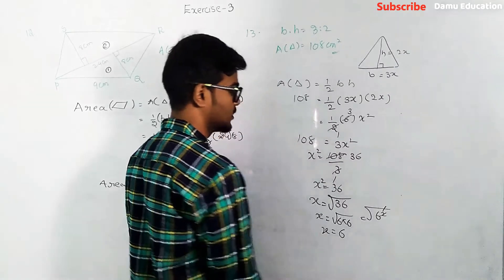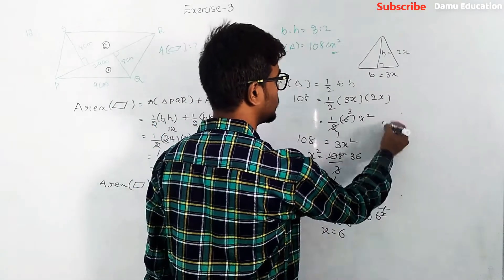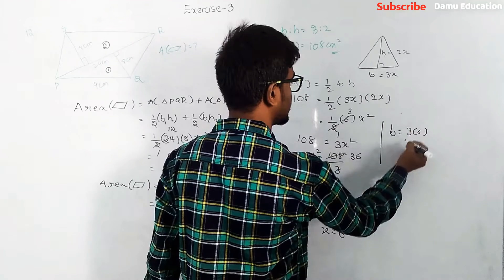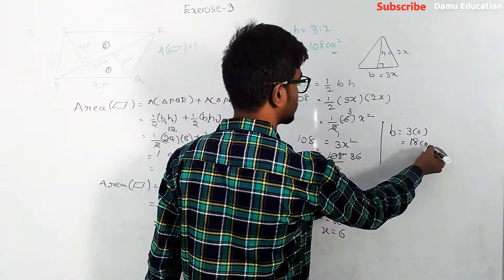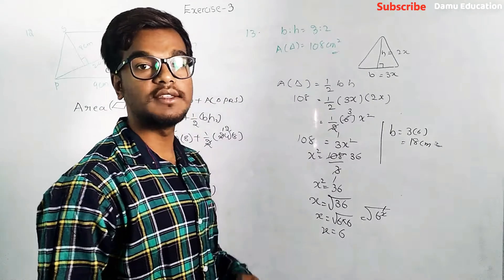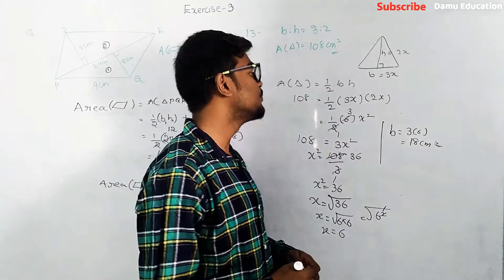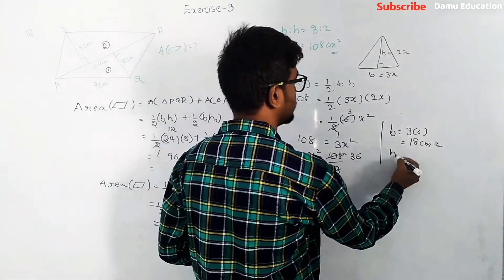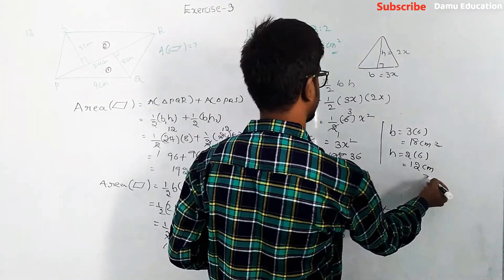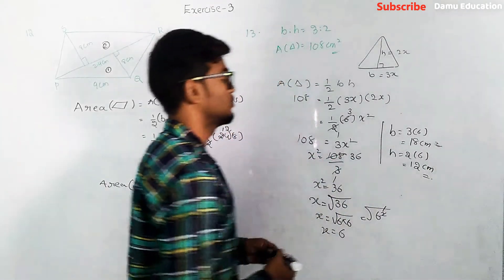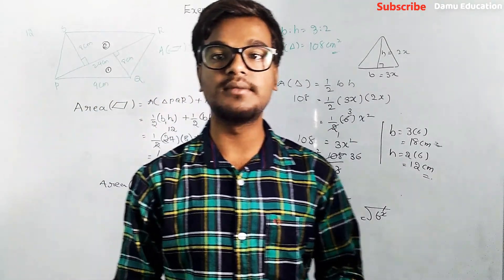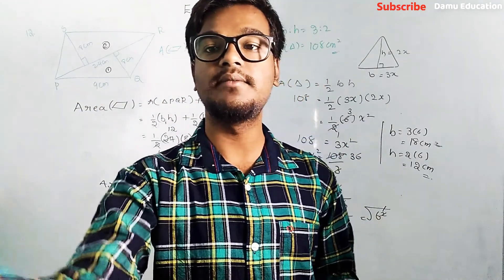Therefore, base = 3x = 3 × 6 = 18 centimeters, and height = 2x = 2 × 6 = 12 centimeters. Thanks for watching this video. If you like the video, please give a thumbs up and click subscribe and the bell icon.